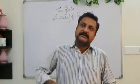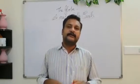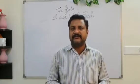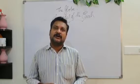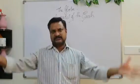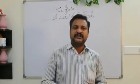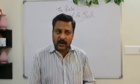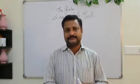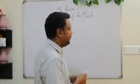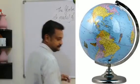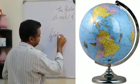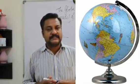As science and technology developed, we had a great eagerness to study more about the Earth. But because of the Earth's huge size, it was quite difficult to study directly. So we wanted something comparatively small but with almost all the features of the Earth on it. That is how we got the thing called the Globe.